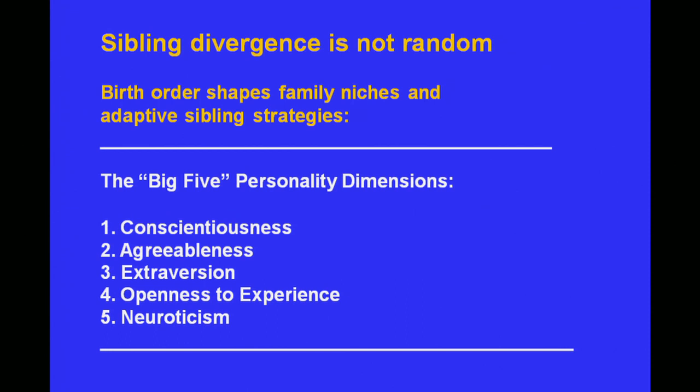Sibling divergence is not a random process — there are many things that shape it. One of the things we understand best is the role that birth order plays. Birth order shapes family niches, just as differences in ecology shape the niches that species occupy, and it leads to adaptive sibling strategies. We can summarize these adaptive strategies under five basic personality dimensions. If you analyze every personality test on Earth, in every possible language, they're really telling you five basic things: conscientiousness, agreeableness, extroversion, openness to experience, and neuroticism or anxiety-related traits.